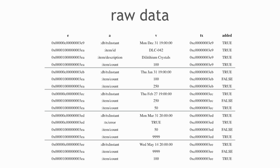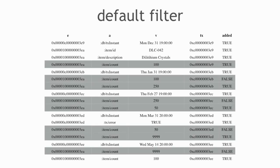Here's a sample database about the number of dilithium crystals on hand. The bars separate different transactions: we started with 100, then set it to 250 (the cardinality-one attribute automatically retracted 100), then set it to 50, then to 9,999 (which was a data entry error), then back to 100. With the default filter, the retraction filter filters out everything shown in gray — the original 100, the 250, the 50, and the 9,999 — and you see only the current value of 100.